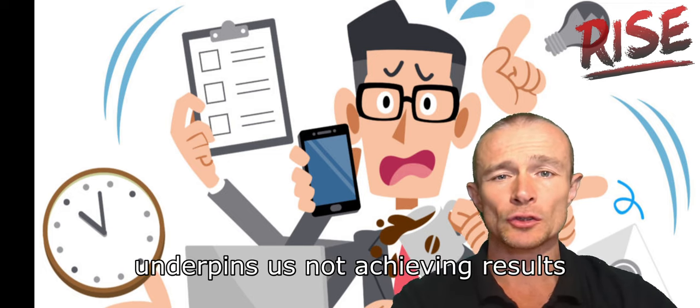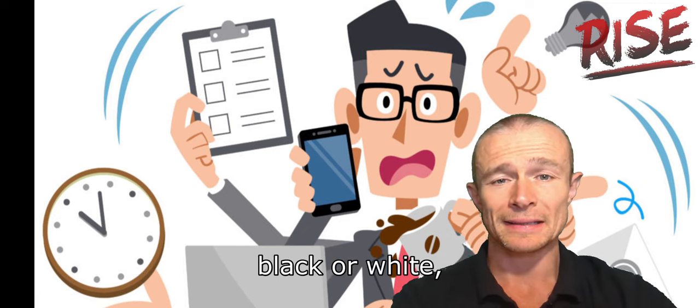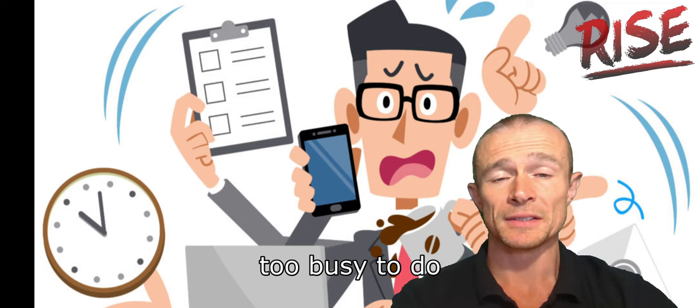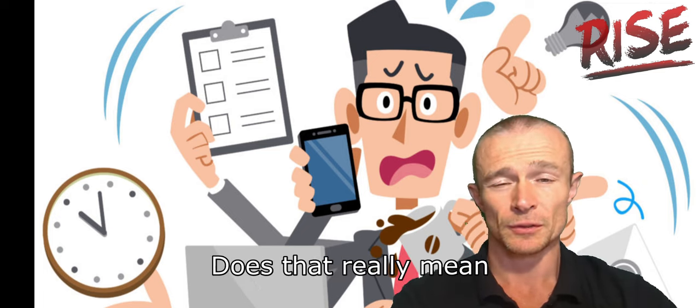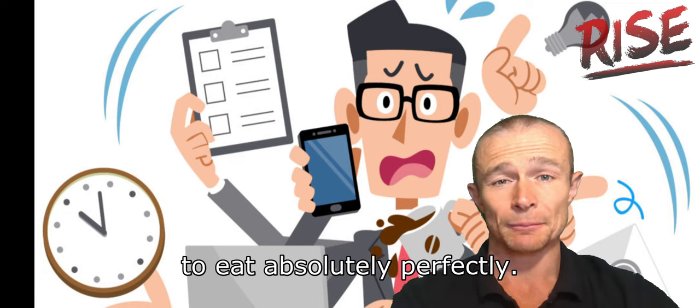And often what underpins us not achieving results when we're busy again is that all-or-nothing, black-or-white, dichotomous thinking, on-it or off-it approach. We may well be too busy to do five workouts in a week. Does that really mean we're too busy to do one?